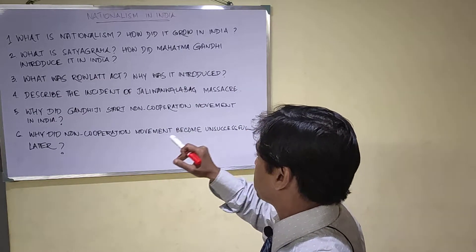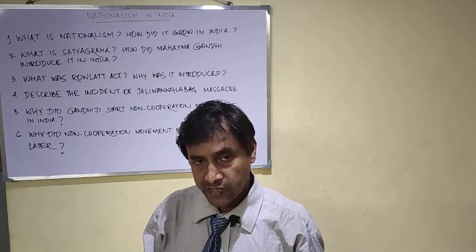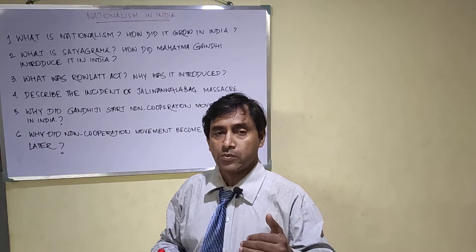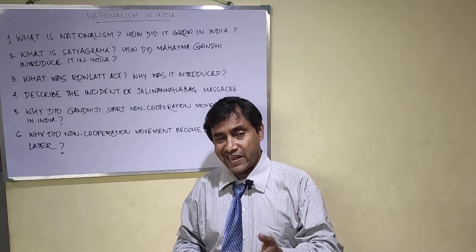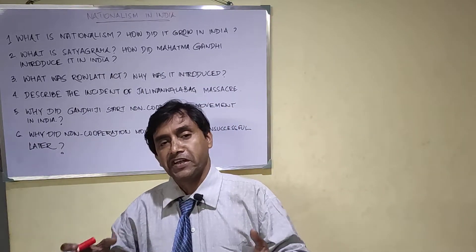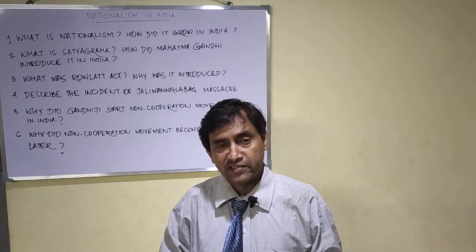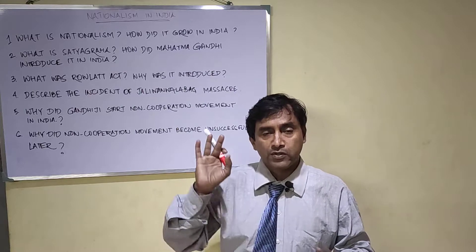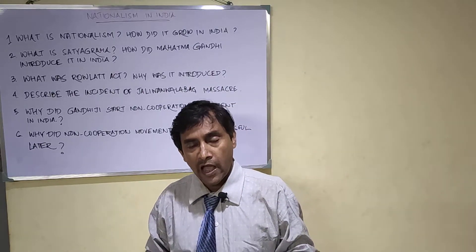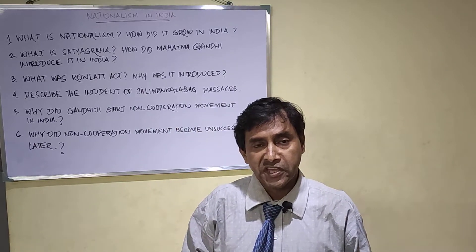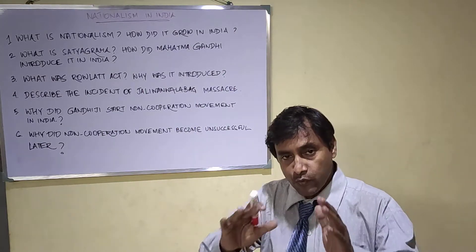Why did Gandhiji start the Non-cooperation movement in India? Gandhiji wrote a famous book called Hind Swaraj, in which he mentioned that India is under British rule because Indian people are cooperating with the British. That is why the British are able to capture India and stay for a long time. So, in order to overthrow British rule, the most important thing is not to cooperate with them — if Indians refuse, British rule will collapse within one year and Swaraj will come back. With this aim, he introduced the Non-cooperation movement in India.